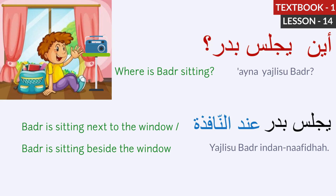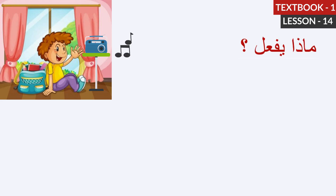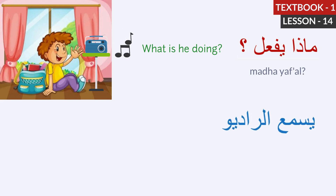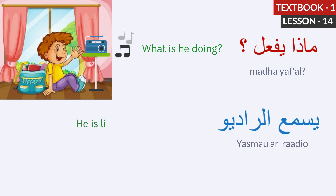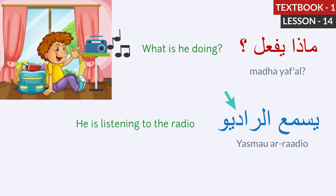Aina tajlisu al-badar. Where is Badar sitting? Badr is sitting next to the window. What is he doing? He is listening to the radio. Let's repeat. What is he doing? He is listening to the radio.